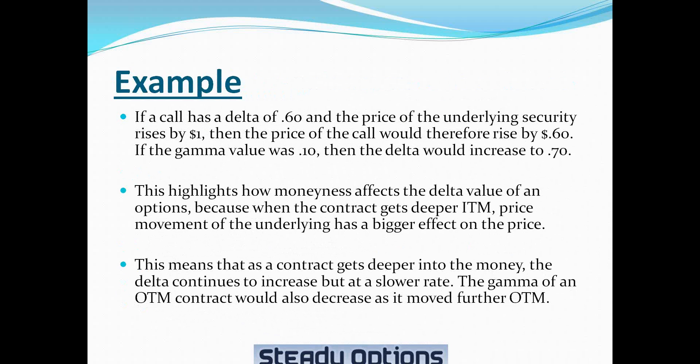This highlights how moneyness affects the delta value of the options contract. Because when the contract gets deeper into the money, each price movement of the underlying security has a bigger effect on the price. The gamma is also affected by moneyness, and it decreases as an in-the-money contract moves further into the money. This means that as the contract gets deeper into the money, the delta continues to increase but at a lower rate. The gamma of an out-of-the-money contract would also decrease as it moves further out of the money. So gamma is typically at its highest for options that are at the money or very near the money.